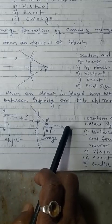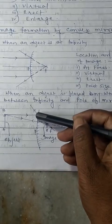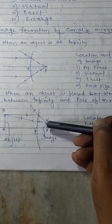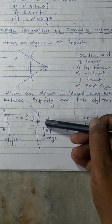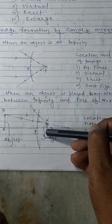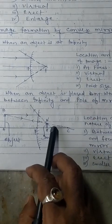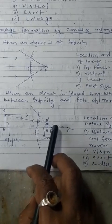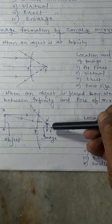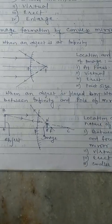The other ray is passing through the center of curvature. After reflection, it passes along the same path. So the incident ray and reflected ray intersect at B dash. At B dash, A dash — the image is formed between focus and pole of the mirror.